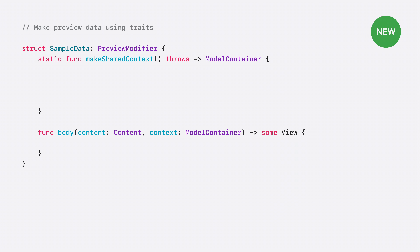Queries are easy to use in SwiftUI with the predicate macro and become more powerful with expressions. Now, with the index macro, you can make them even more performant in your app. Use the power of Swift Data to build your app's model layer. Consider adding unique constraints to your schema to make it easier to avoid duplicate models, and speed up your queries by adding the new index macro. Use the new history API to track changes to your app's models. And with custom data stores, you can now harness the power of Swift Data with your own document format or persistence backend. Thank you. It's been an honor and we look forward to the amazing things you will make.